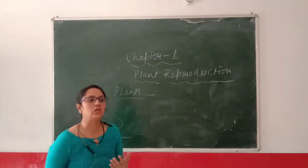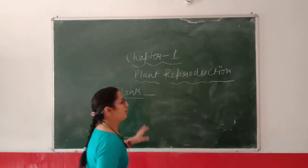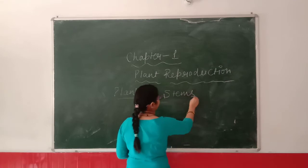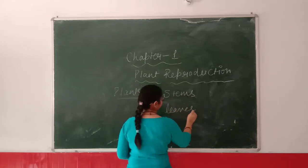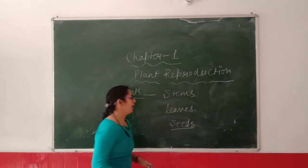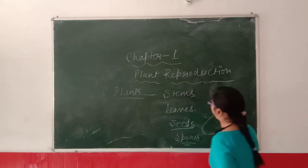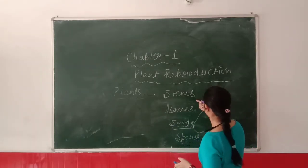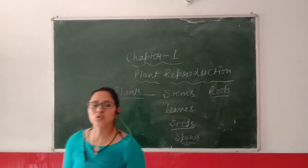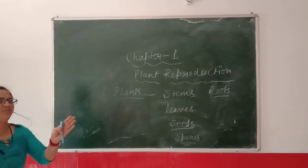Just like human beings and animals, plants can also reproduce. But plants can be reproduced by different parts of the plant. Plants can reproduce by stems, by leaves, by roots, and by spores. So we are going to learn about each one by one, as different types of plants can reproduce by different parts.